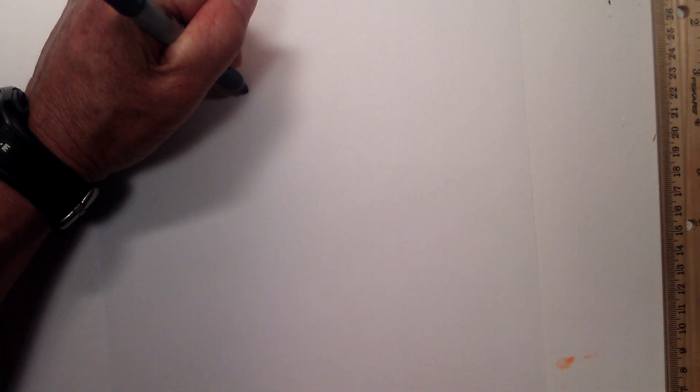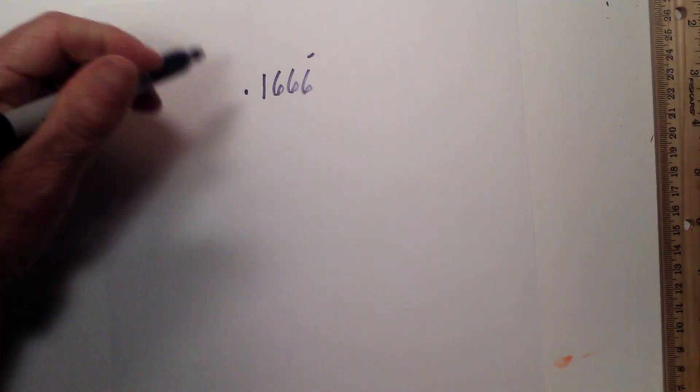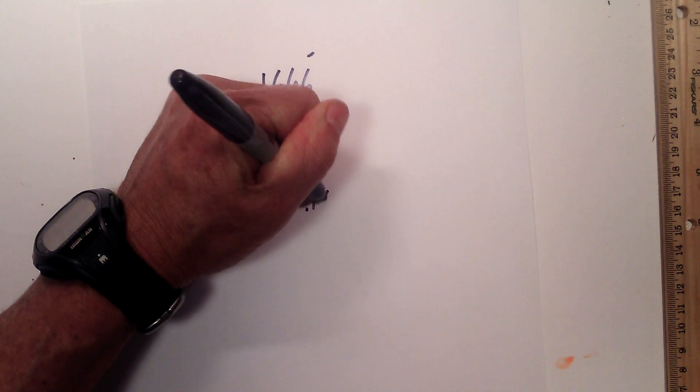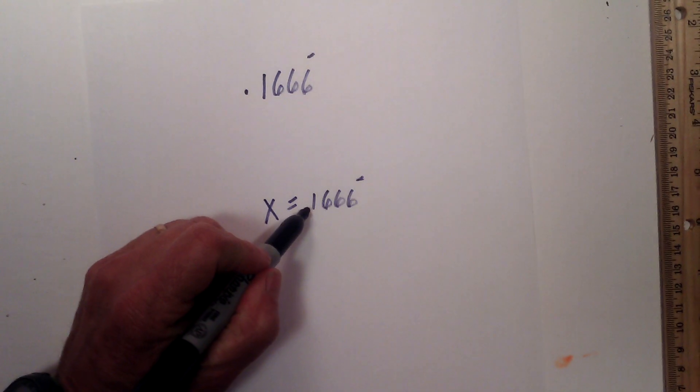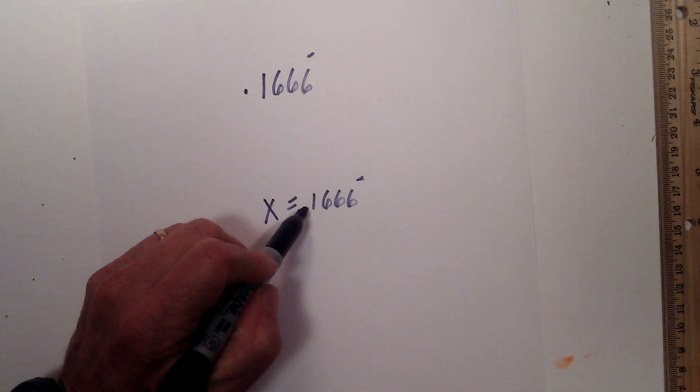Now let's move to one where you have a non-repeating digit. Like 0.1666 repeating. And notice the one does not repeat. So step one, let's set it to the repeating decimal. Step two, remember we need the repeating portion to the left of the decimal.